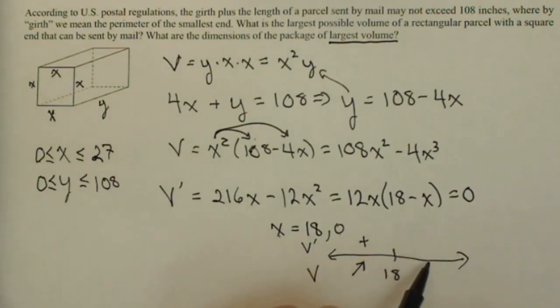I use a number larger than 18, say 19. I've got positive times a negative, so I'm going to have decreasing. So 18 is, in fact, going to yield the maximum possible volume.